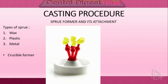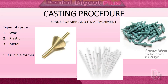Sprues can be made of wax, plastic, or metal. Wax sprues are preferred for most castings because they melt at the same rate as the wax pattern and allow easy escape of molten wax. Solid plastic sprues soften at higher temperatures and may block wax escape, increasing casting roughness; however, plastic sprues are useful for fixed partial dentures due to added rigidity. Hollow plastic sprues are also available, allowing wax escape.